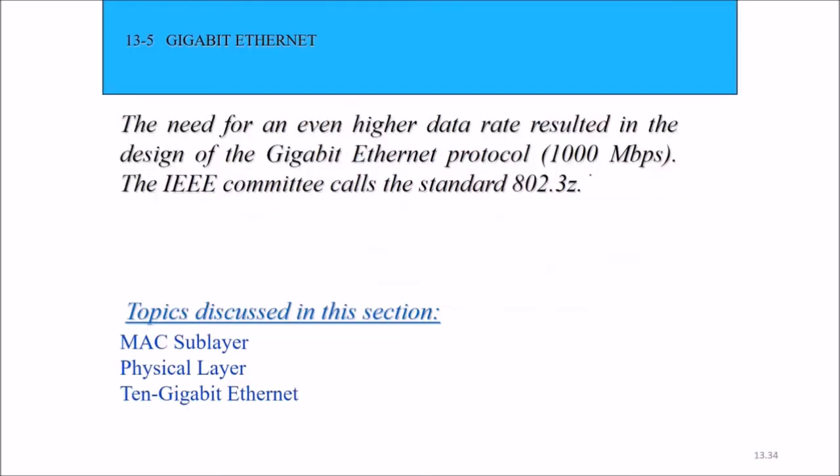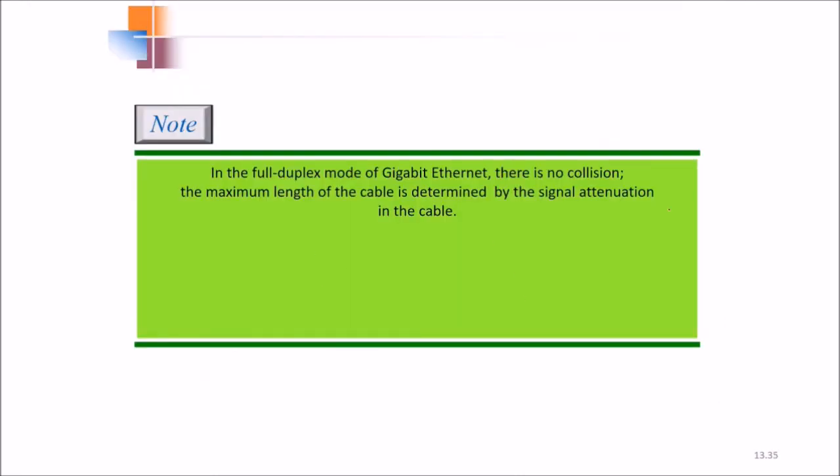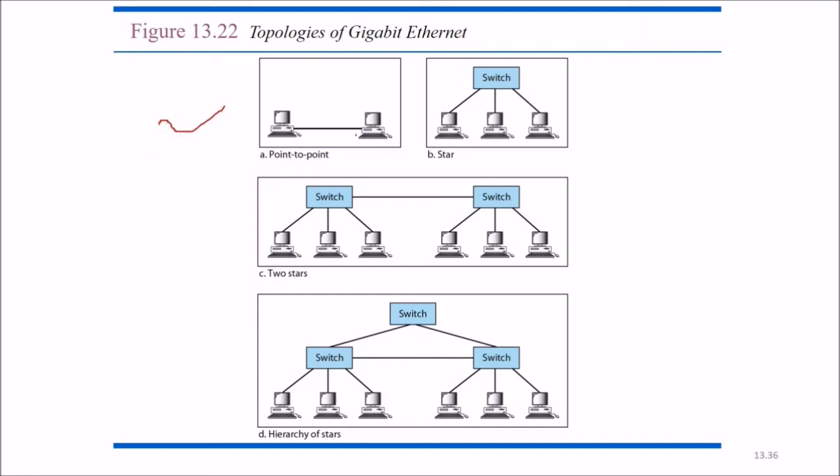Then came the gigabit or 1000 Mbps Ethernet. The need for an even higher data rate resulted in the design of gigabit Ethernet protocol. IEEE committee calls it as 802.3Z. In the full duplex mode of gigabit Ethernet means 1000 Mbps, we are talking about 1000 Mbps, that is Gbps, there is no collision. The maximum length of the cable is determined by the signal attenuation in the cable. These are the topologies of gigabit Ethernet: star, two stars, hierarchy of stars, along with combined through switches.